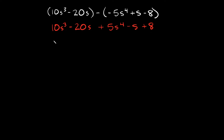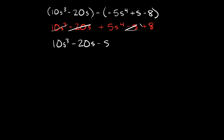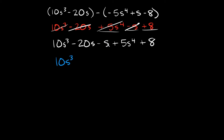Next we're going to combine like terms. We have 10s cubed — do we have anything else with s cubed? No, so we're done with that term. Then we have minus 20s — do we have anything that just has an s? Yes, this minus s, so bring that down. Then plus 5s to the fourth is the only term with s to the fourth, and lastly plus 8. So combining: 10s cubed stays alone; negative 20s minus s — since s has no coefficient there's basically a 1 there, so negative 20 minus 1 equals negative 21s; and plus 5s to the fourth and plus 8 don't combine with anything.